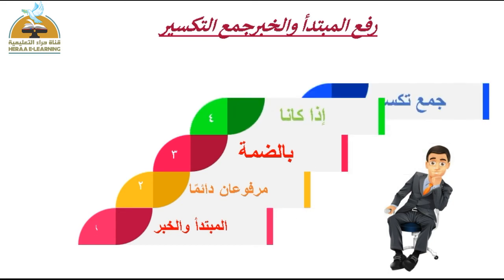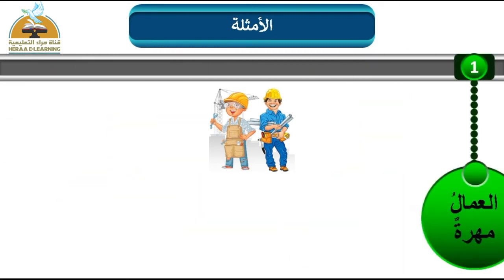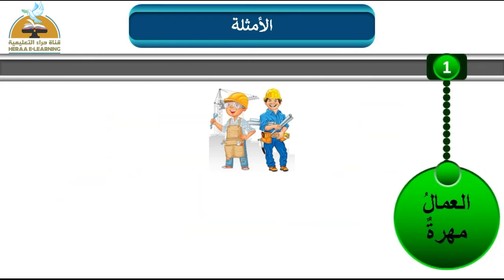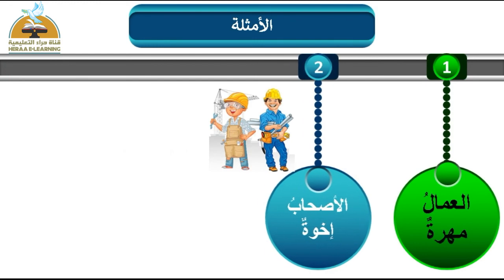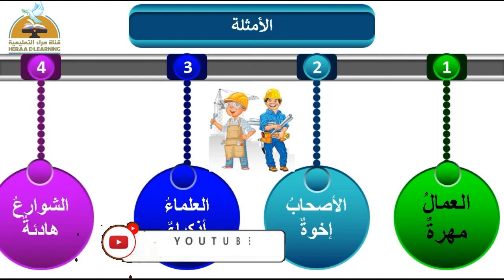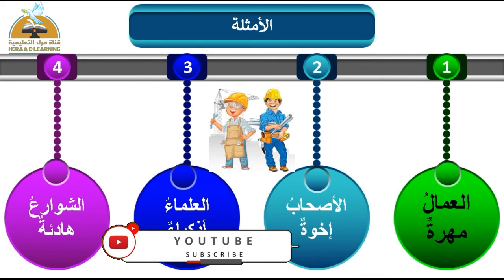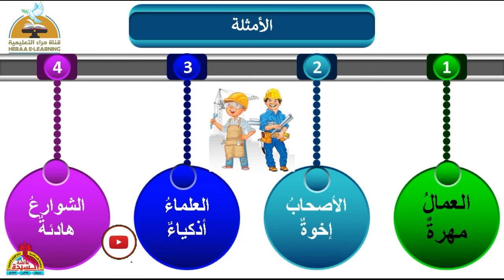هيا نشوف الأمثلة. المثال الأول: العمال مهرة. المثال الثاني: الأصحاب إخوة. المثال الثالث: العلماء أذكياء. المثال الرابع: الشوارع هادئة.